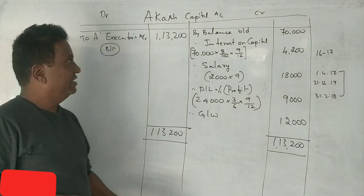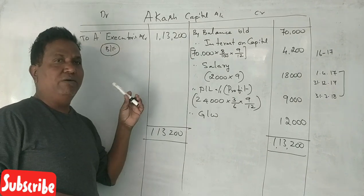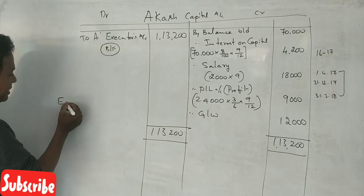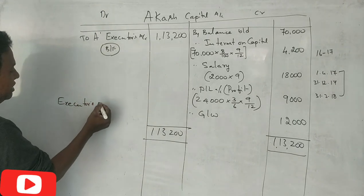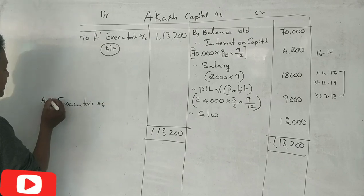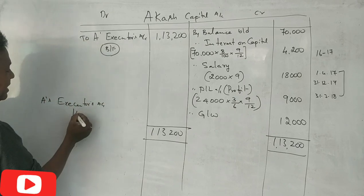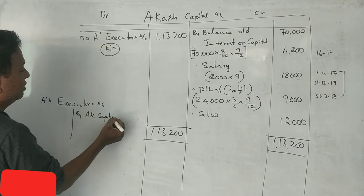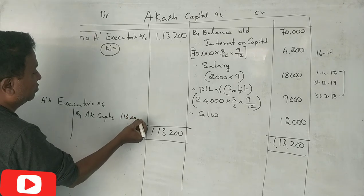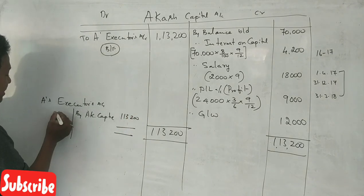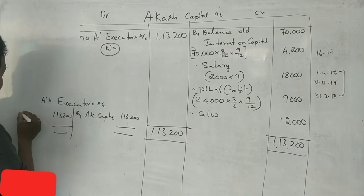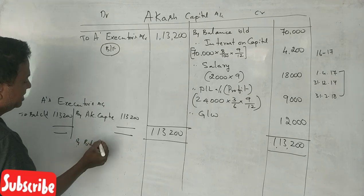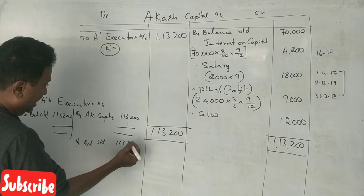The executor's account is very easy. On the debit side, the cash or capital account shows 1,13,200. On the credit side, 1,13,200 is shown as balance carried down, and then balance brought down. This is a 6-months topic.